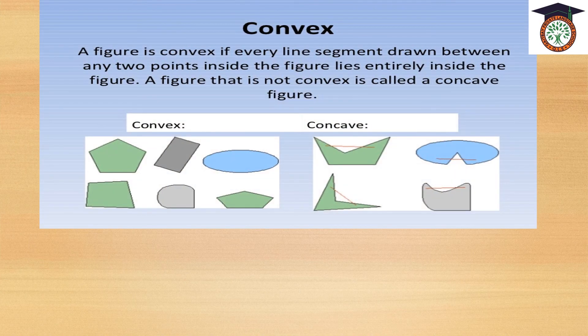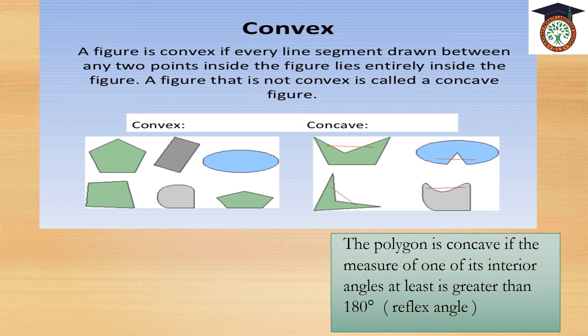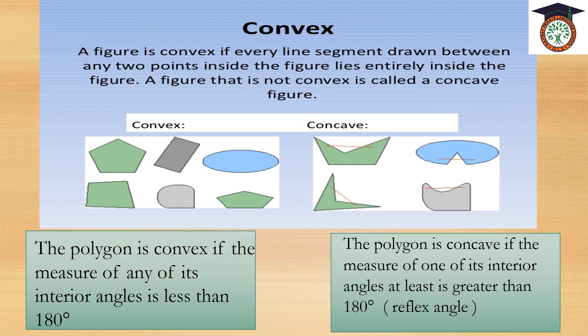Convex and concave polygons. A figure is convex if every line segment drawn between any two points inside the figure lies entirely inside the figure. A figure that is not convex is called a concave figure. The polygon is concave if the measure of at least one of its interior angles is greater than 180 degrees — that means a reflex angle. The polygon is convex if the measure of any of its interior angles is less than 180 degrees.